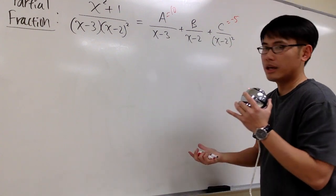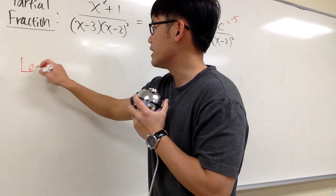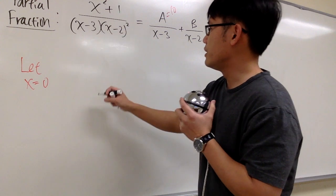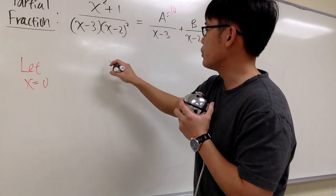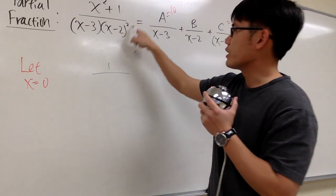So perhaps now you can just pick easy numbers to work with. Let's just pick some easy numbers. I will say that x is equal to 0, I think that's easy enough. And then plug into here, we get 0 squared plus 1, which is 1, over plug in 0 here, plug in 0 here, and work out the power first.